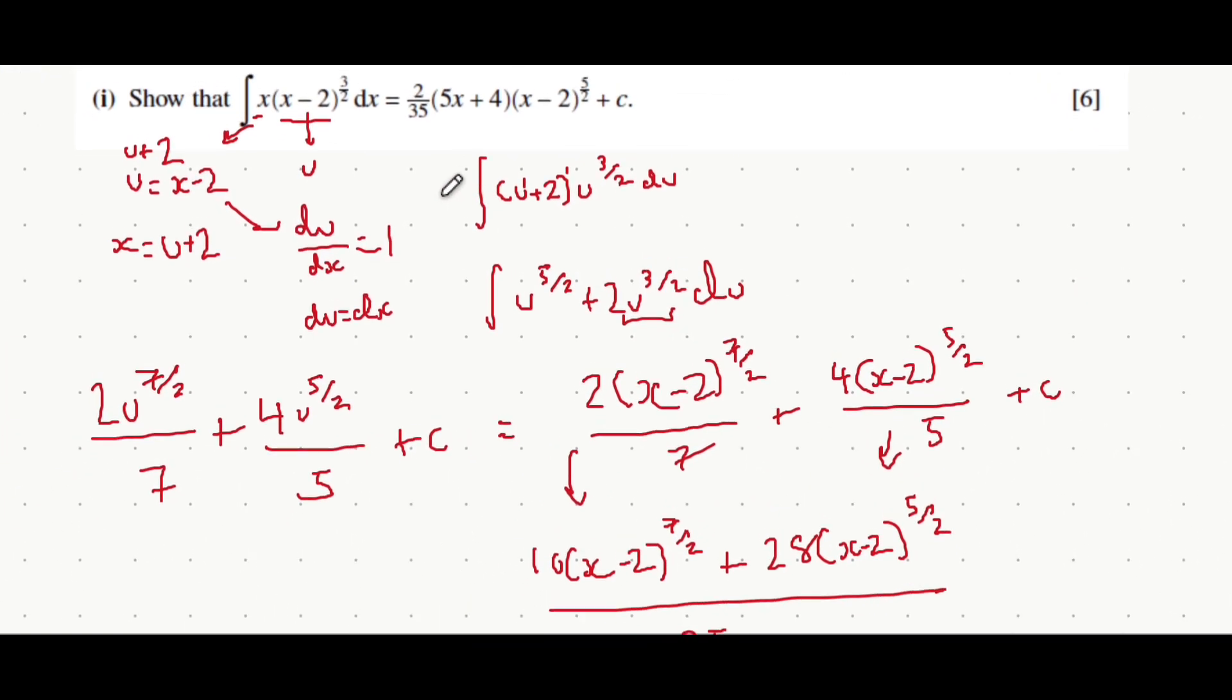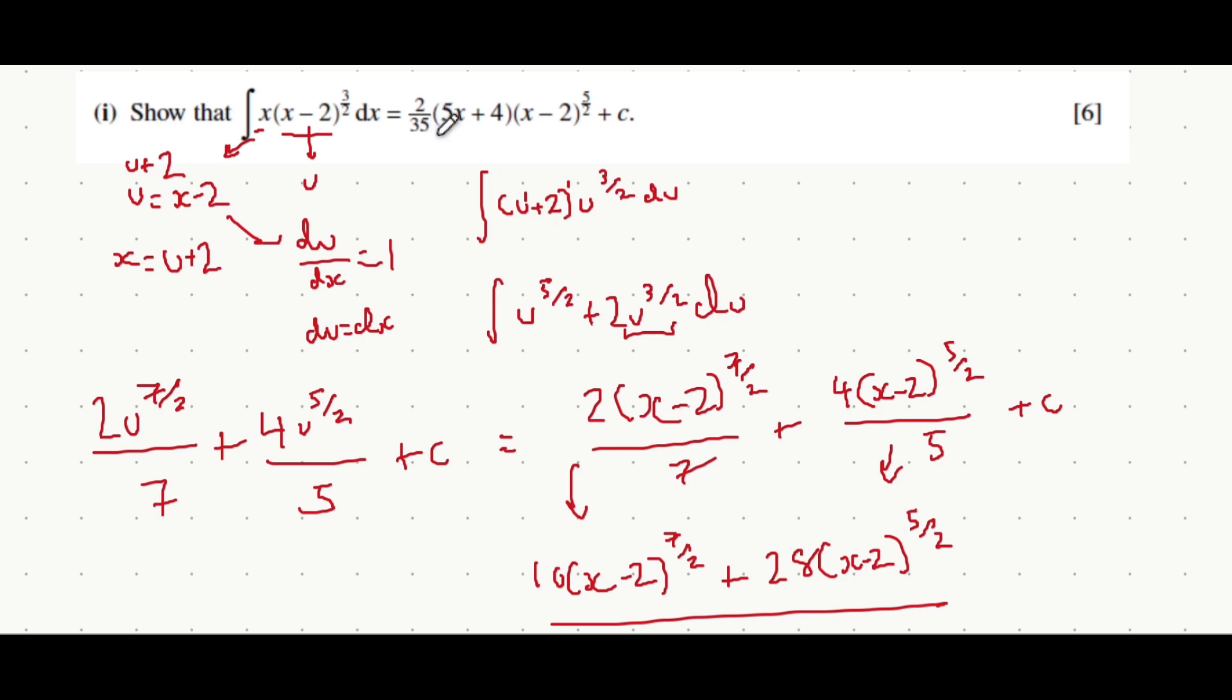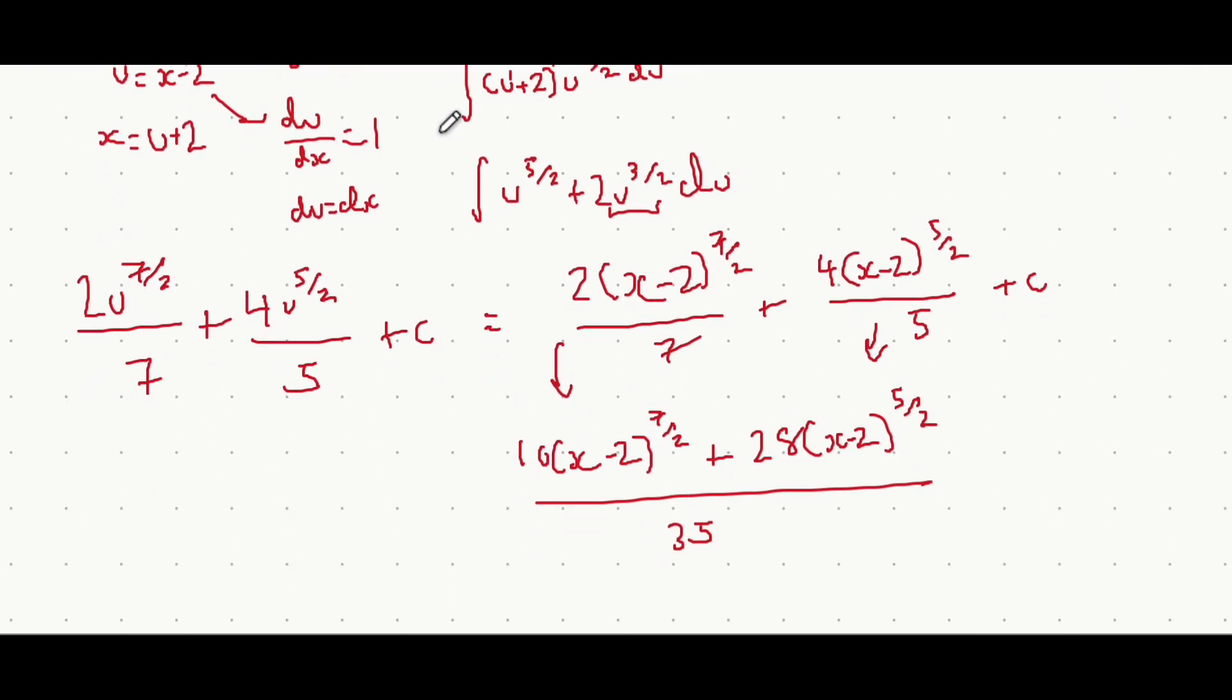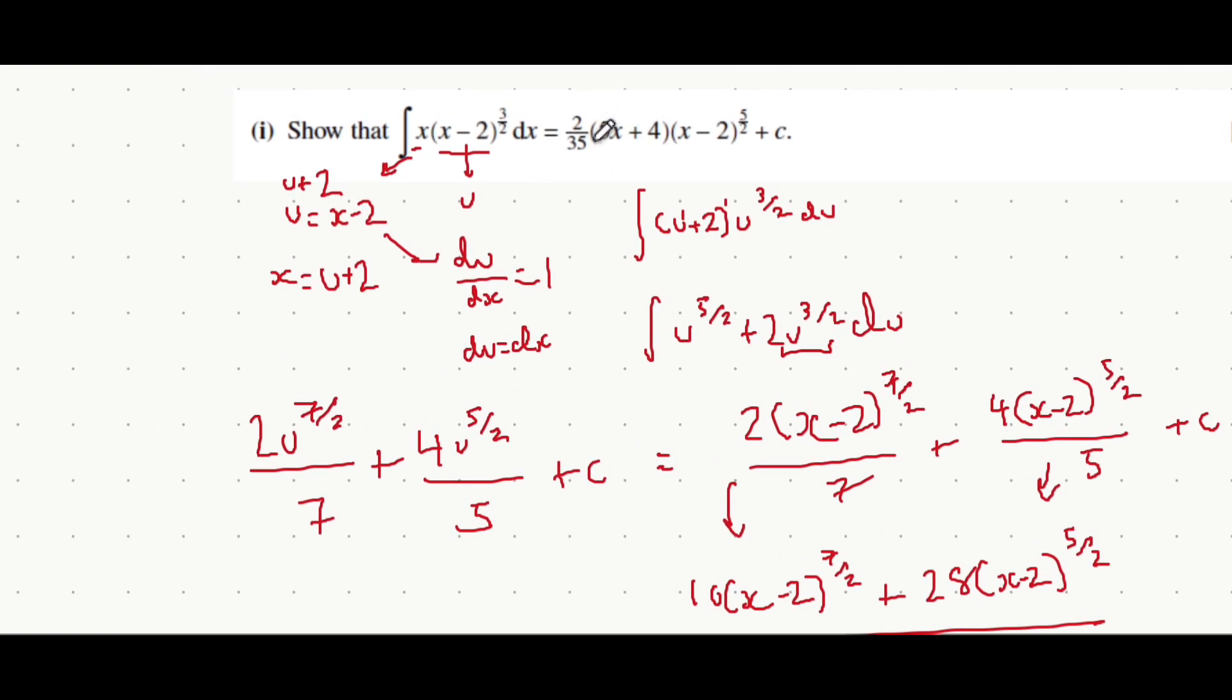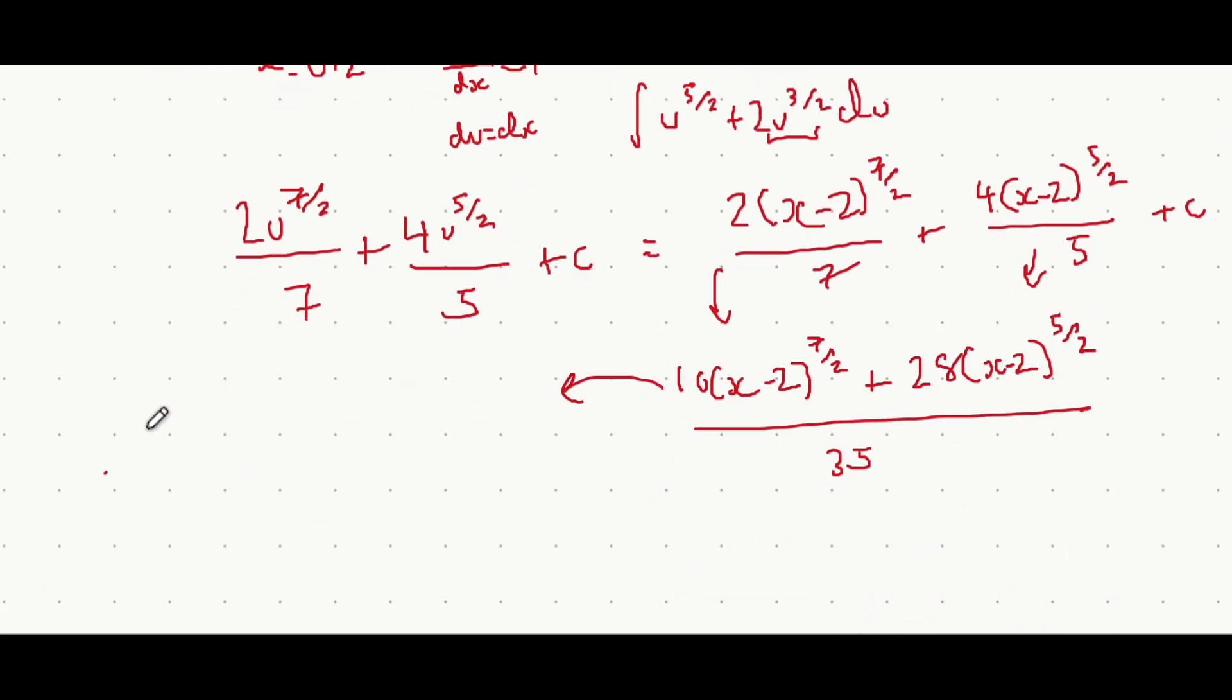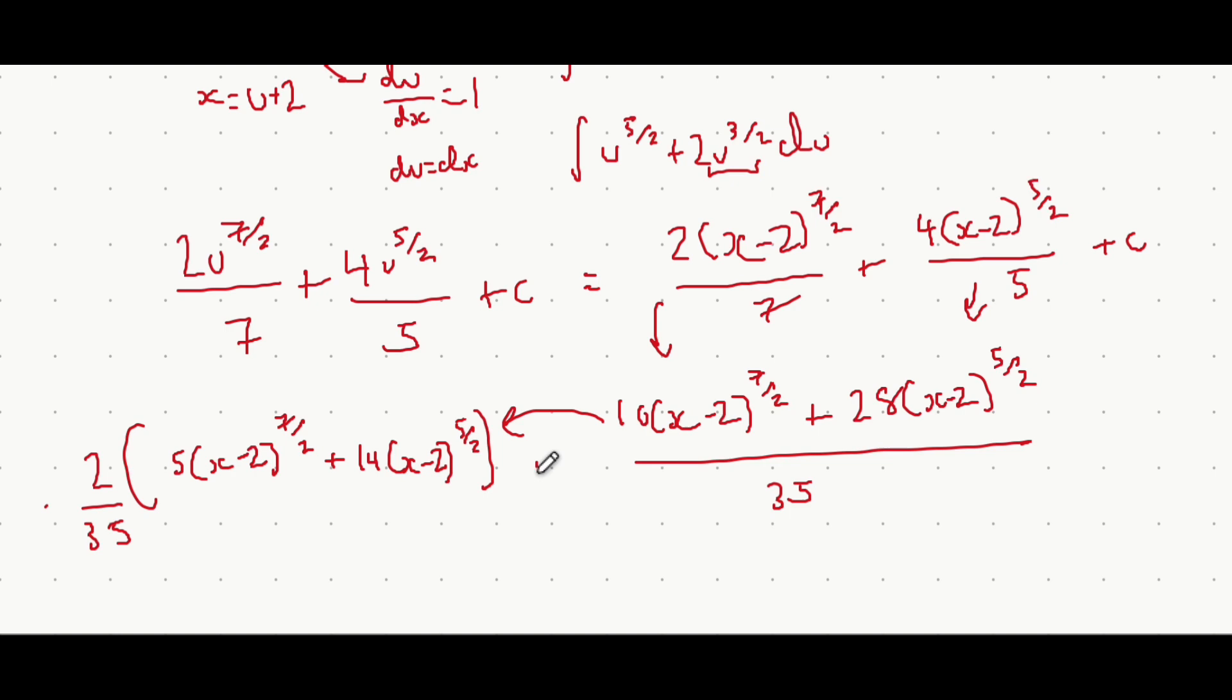Now, where we go from there is you can notice that there's only a 2 outside of the bracket, so focusing on only the numerator, you want to factor out 2. If you factor out 2, it becomes 2 lots of 5, x minus 2, all to the power of 7 over 2, plus, well, to go from 2 to 28, you multiply 14, x minus 2 to 5 over 2. So from here, it's just always comparing it to the final show that answer and going as far as you can, and you can leave 2 over 35 there, plus the c still. The plus c is unaffected in the whole process.